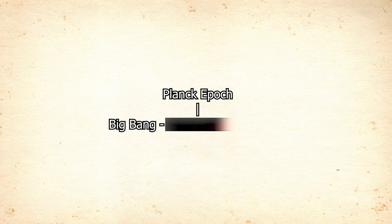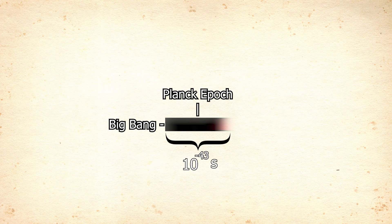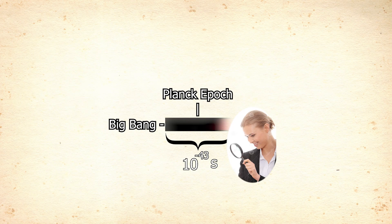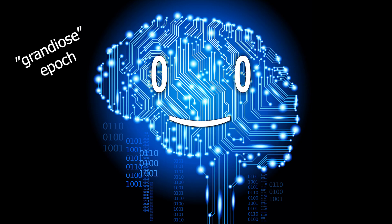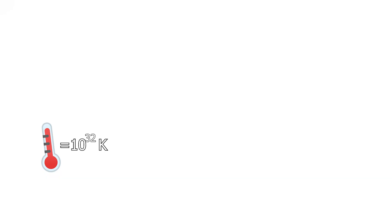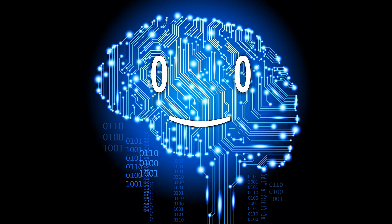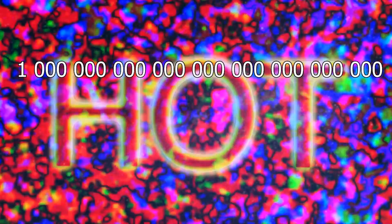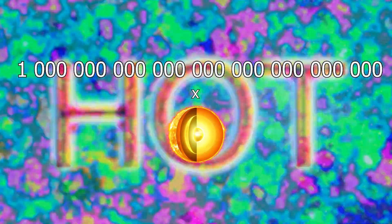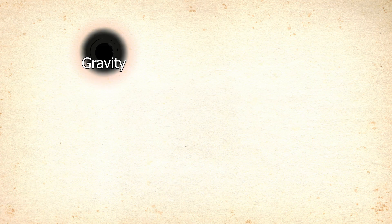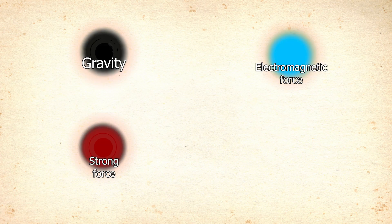And then it happened: the Planck Epoch, the very first period of our universe. The name comes from its duration of one Planck time, or 10 to the power of minus 43 seconds — the smallest indivisible interval of time. During this grandiose epoch, the temperature was up to 10 to the power of 32 Kelvin — not a big deal, just one billion billion billion times hotter than the core of the Sun. At this time, the conditions were so extreme that all the fundamental forces — gravity, electromagnetic, strong and weak forces — were unified in just one superforce.